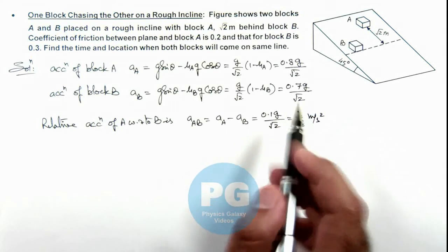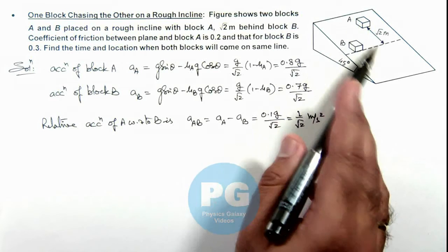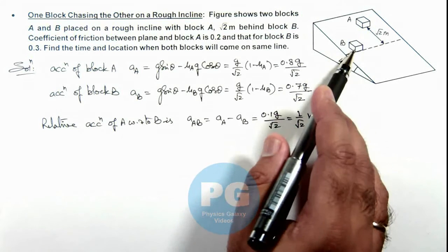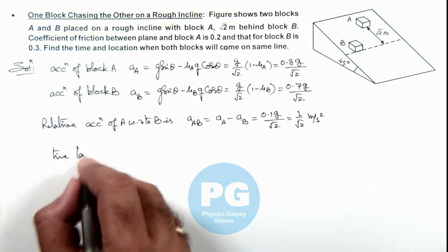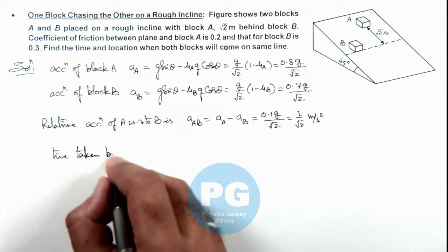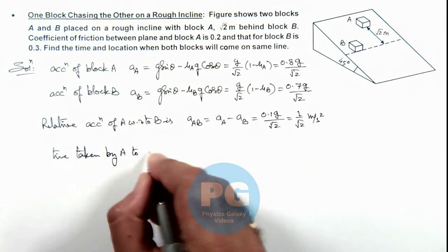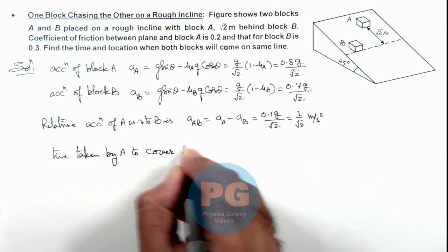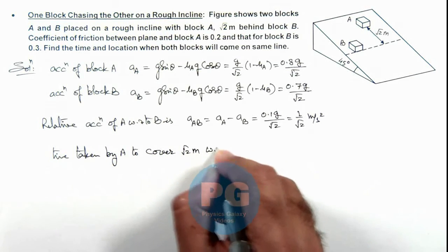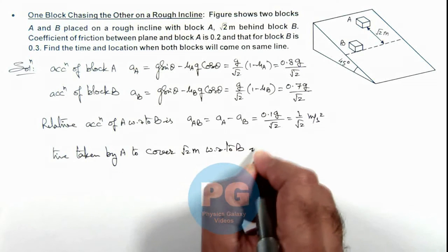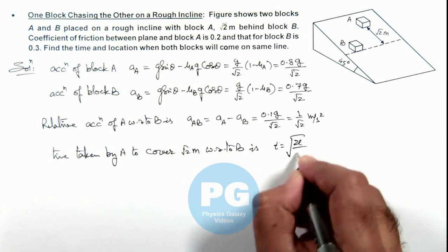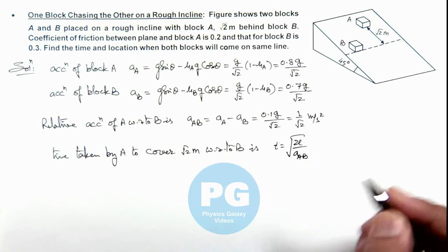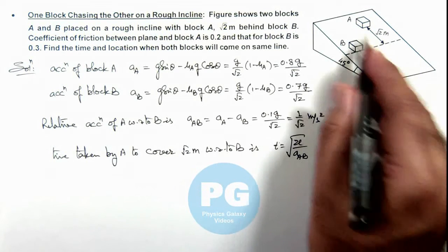So if it takes t time to cover the distance √2 meter with respect to block B, we can directly calculate the time taken by A to cover √2 meter with respect to B. The time we can simply write as √(2L/a_rel) as this distance will be ½at².